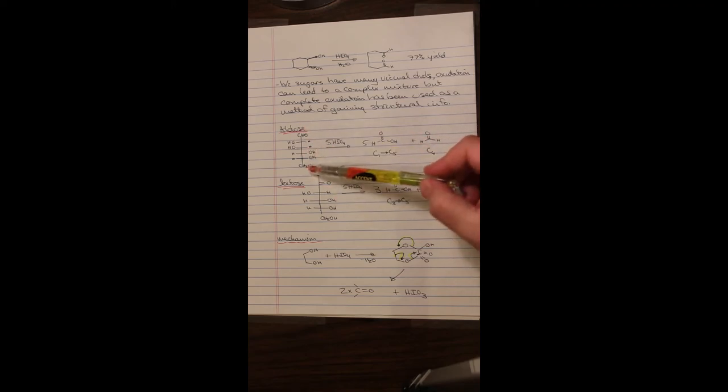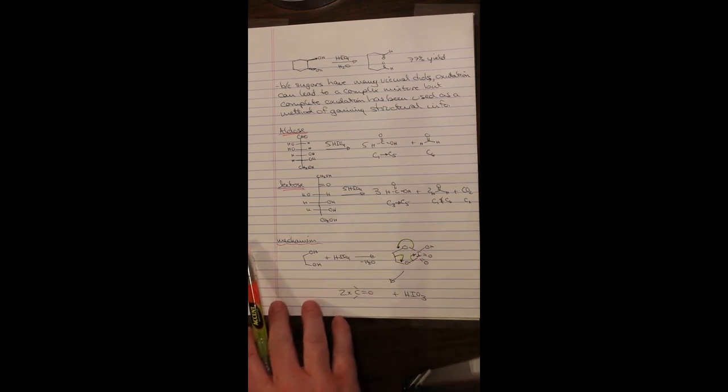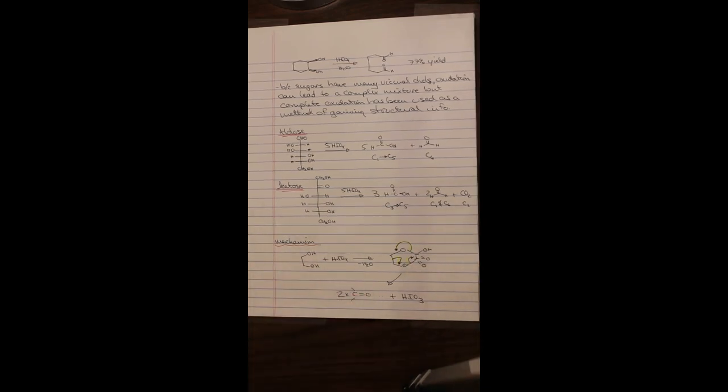For an aldose, if you treat this with periodic acid, you're going to get five equivalents of formic acid, C1 through C5. You're going to get one equivalent of formaldehyde, which is C6 on the end. If you have a ketose and you treat it with periodic acid, you're going to get three equivalents of formic acid, C3 through 5, two equivalents of formaldehyde, which are C1 and C6, and C2 is going to generate carbon dioxide. We can tell by the outcomes of these reactions whether they were ketose or an aldose, and also how many carbons are in the structure itself. The mechanism is shown here. You create this cyclic ester type species, which undergoes oxidative cleavage through the movement of the electrons, as you see there.